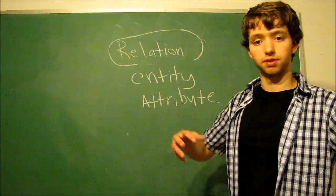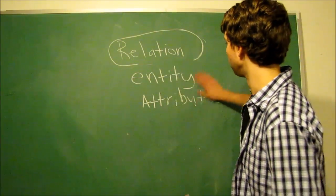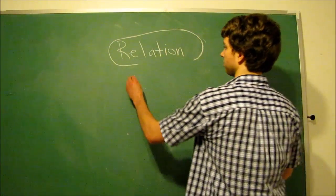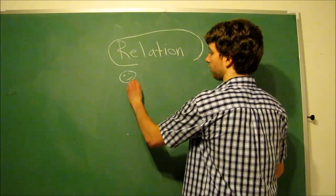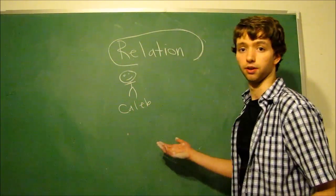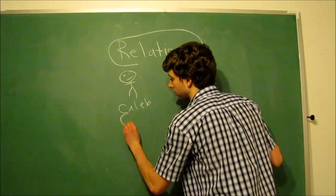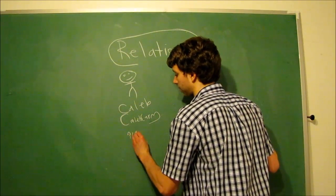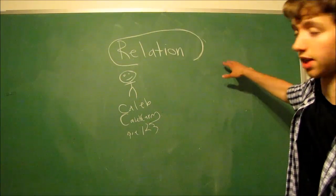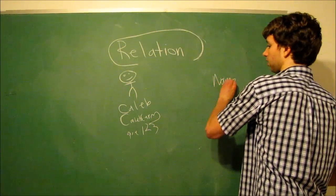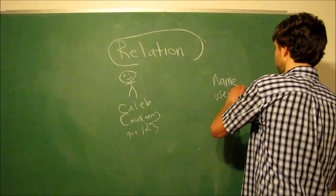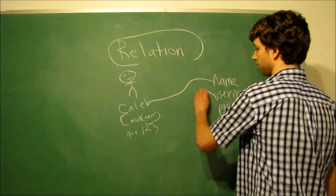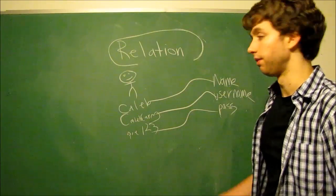When we apply this to this connection with the relation, we have the attribute types and the attribute values. So let's say we have this person over here. And we'll name him Caleb because it's an awesome name. And then we will also give him a username, Caleb Curry with no spaces. And we'll give him a password, Pi 1, 2, 3. And then over here, we have the set of attributes for a table. We have name, username, and password. We can make this connection of data. So the name is Caleb. The username, Caleb Curry. Password is Pi 1, 2, 3.